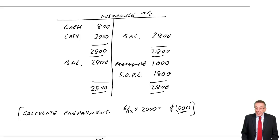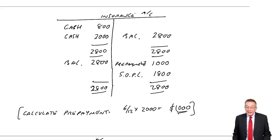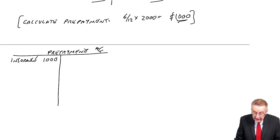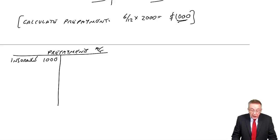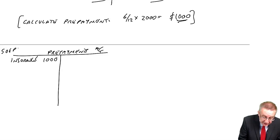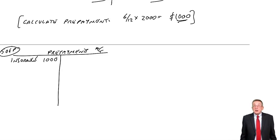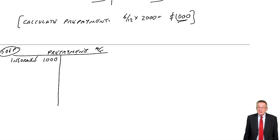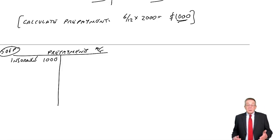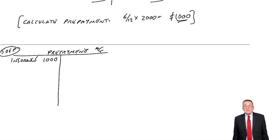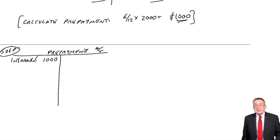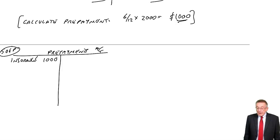That finishes the insurance account — the balance is zero, ready for next year. The prepayments account has a debit balance, so it's an asset — just like a receivable. It'll appear on the statement of financial position as a current asset. As always with statement of financial position items, we leave the balance there, just as in the last chapter we left the balance on receivables and the car account.